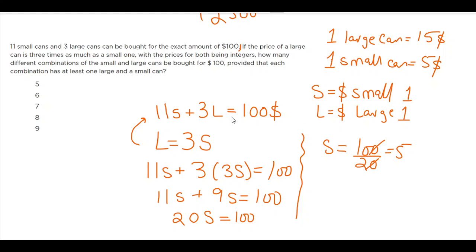Okay, so what is the question basically asking now that I have a lot of information? How many, with the prices of both being integers? So prices are both integers. So yeah, I found those prices. s is an integer and L is an integer. I can confirm the value: one small can is $5 and one large is $15.